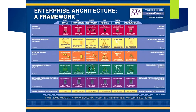Those views are listed across the top of the matrix and are represented with the following terms: what, how, where, who, when, and why. These interrogatives are used to examine and answer questions from the view of the stakeholder and are known as the W5H questions.